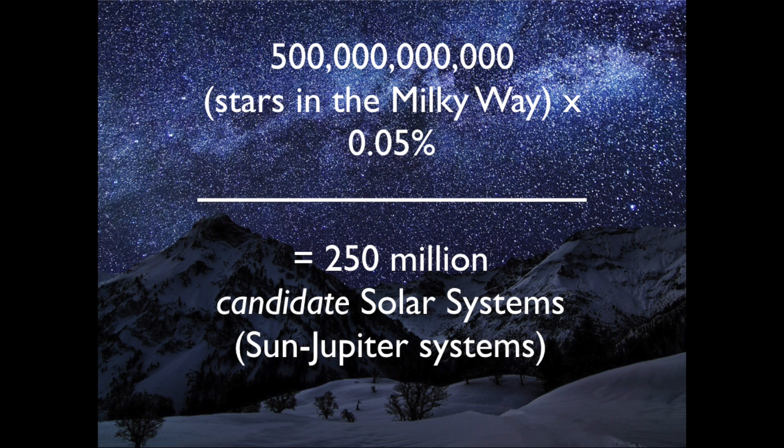Now within the galaxy, there's about 500 billion stars. So that gives us several hundred million candidate solar systems. But remember, these are just candidate Sun-Jupiter systems.